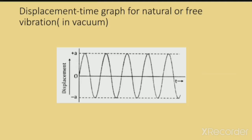In natural vibration, since it occurs in vacuum, the amplitude remains constant and the vibration continues forever, so the frequency also remains the same. The displacement-time graph for natural or free vibration is completely ideal — throughout time, the amplitude remains constant. In actual conditions, this kind of graph will not be seen; it is only for natural vibration in vacuum.